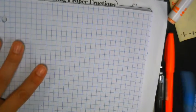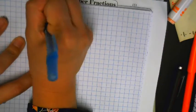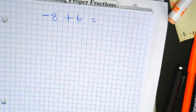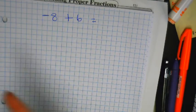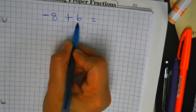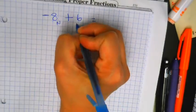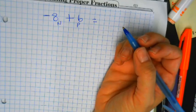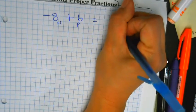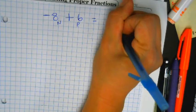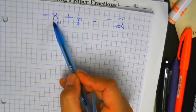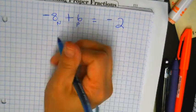For example, negative 8 plus 6 — are the signs the same or different? They're different; this one's a negative and this one's a positive. So you're going to subtract and you get negative 2. The reason it's negative is because you have way more negatives — two more negatives.